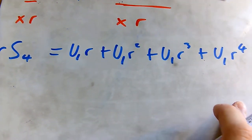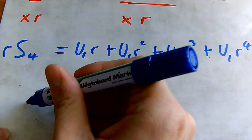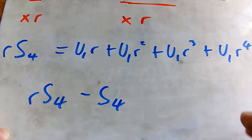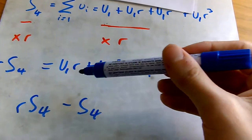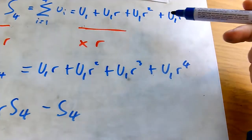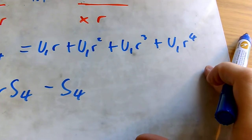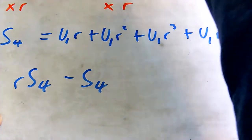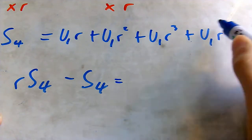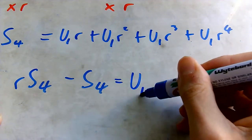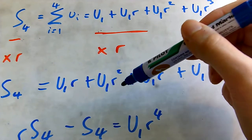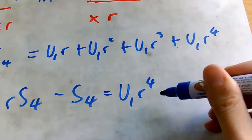The final step is to subtract the original S₄ from r·S₄. When we do that, most of the terms are shared and cancel out. The only term that remains in r·S₄ but not in the original is the term with power four, and the only term in the original but not in the new one is the first term u₁. So because we're subtracting, those are the only surviving terms.